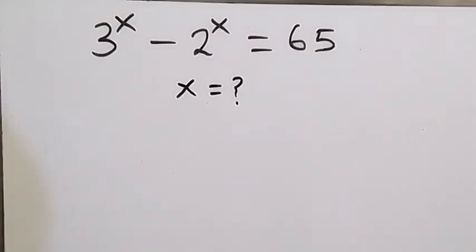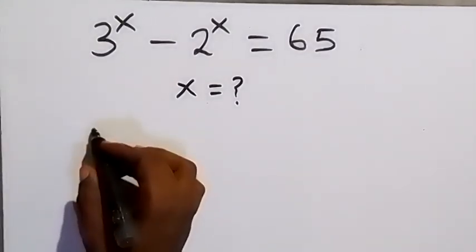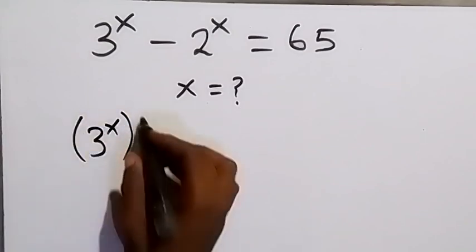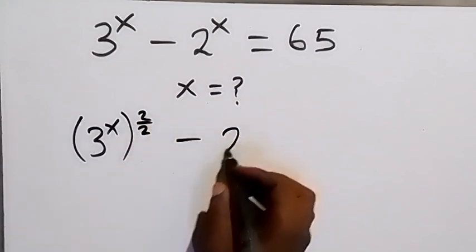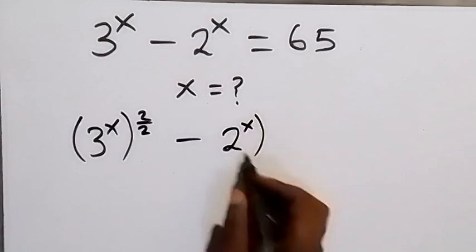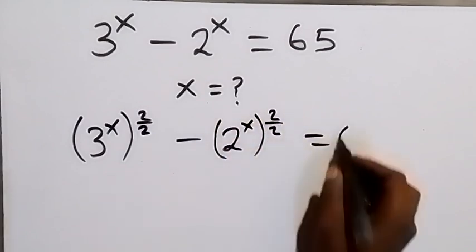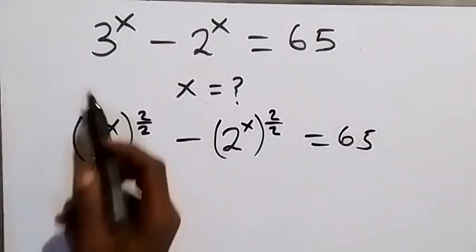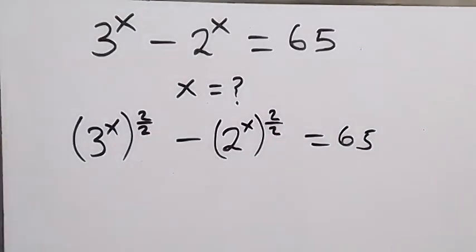Hello, you are welcome. How to solve this nice algebra problem of finding the value of x. Let's rewrite this as 3 raised to power x, then raised to power 2, divided by 2, minus 2 raised to power x, also raised to power 2 over 2, which is equal to 65. This is still the same thing as what we are given because 2 over 2 here is 1.